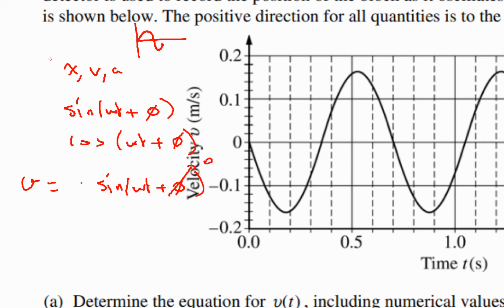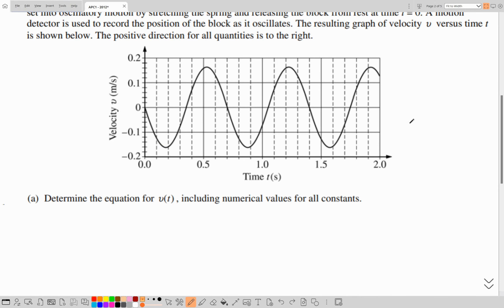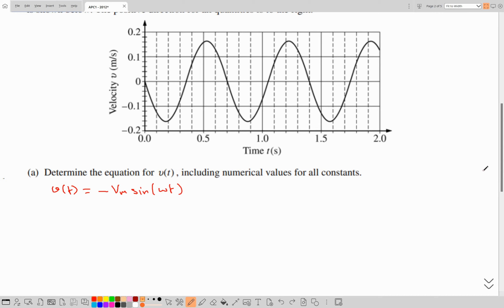We have an amplitude which is the maximum velocity. Because the graph is flipped, we include a minus sign in order to correctly model the velocity function. The velocity as a function of time is given by minus v_m sine(ωt), with no initial phase because we're starting from 0. Now v_m from the graph, which is the positive maximum value of the velocity, is 0.16 meters per second.